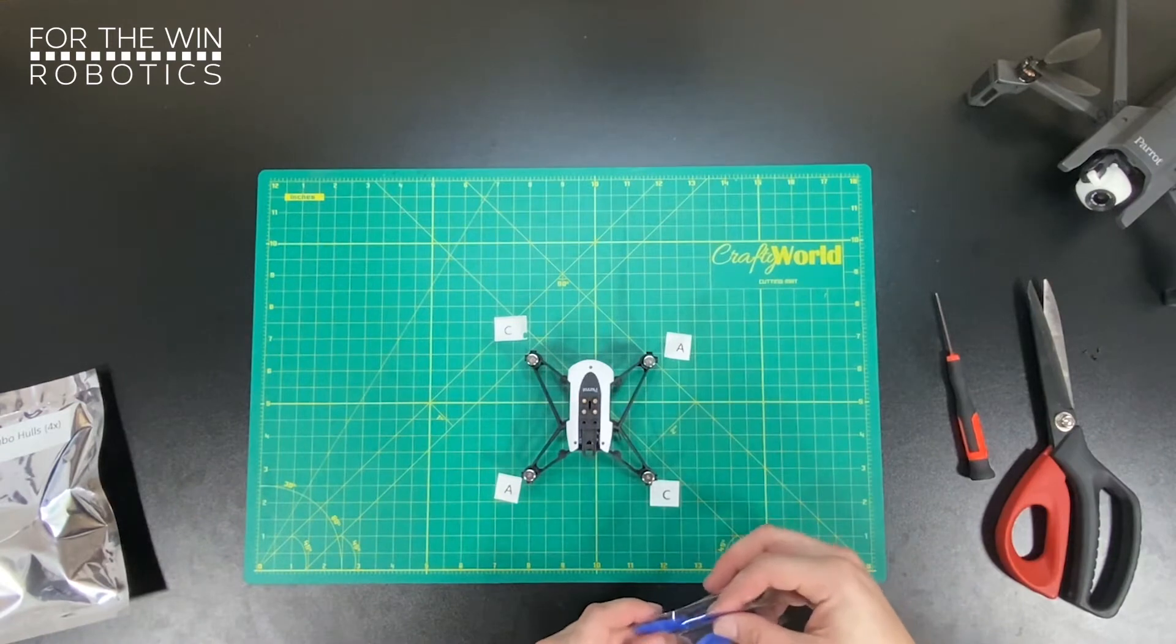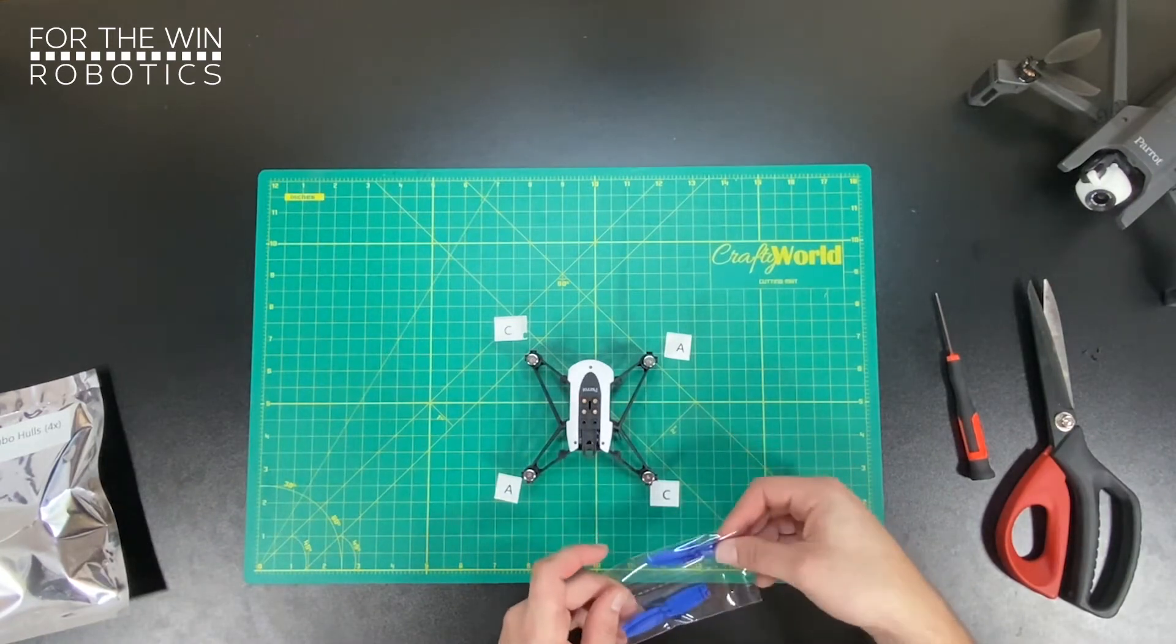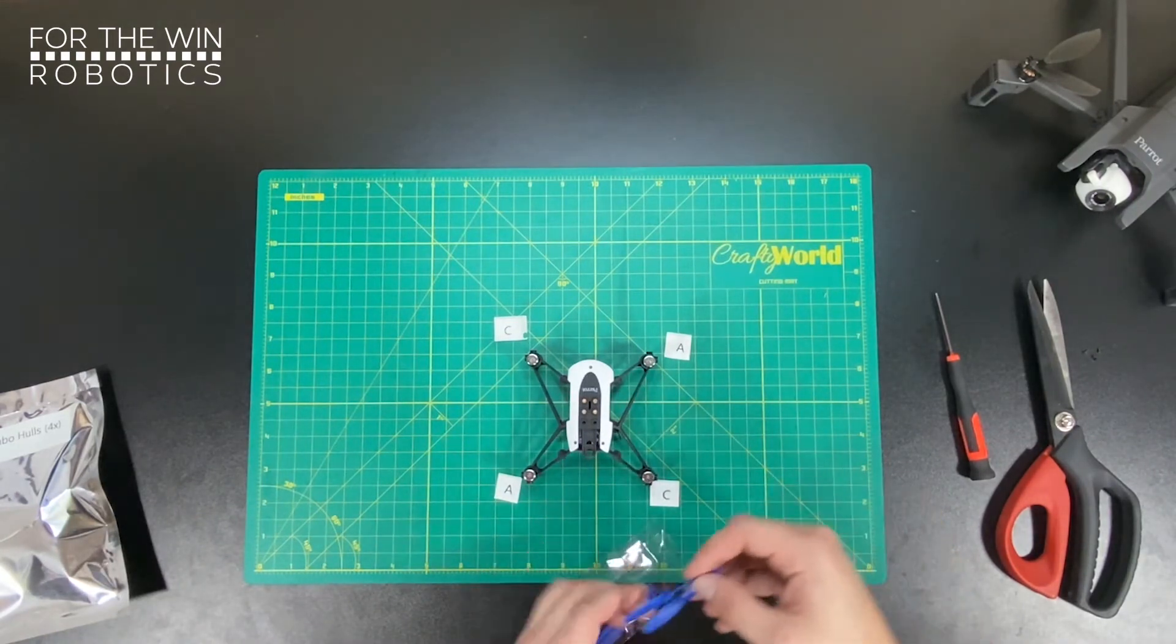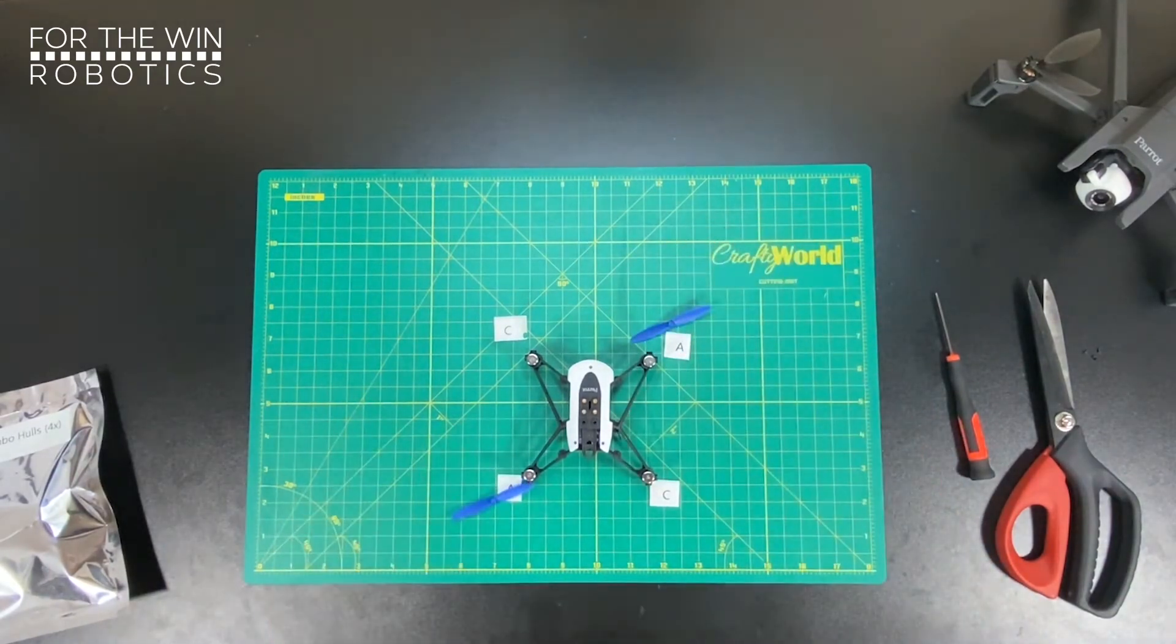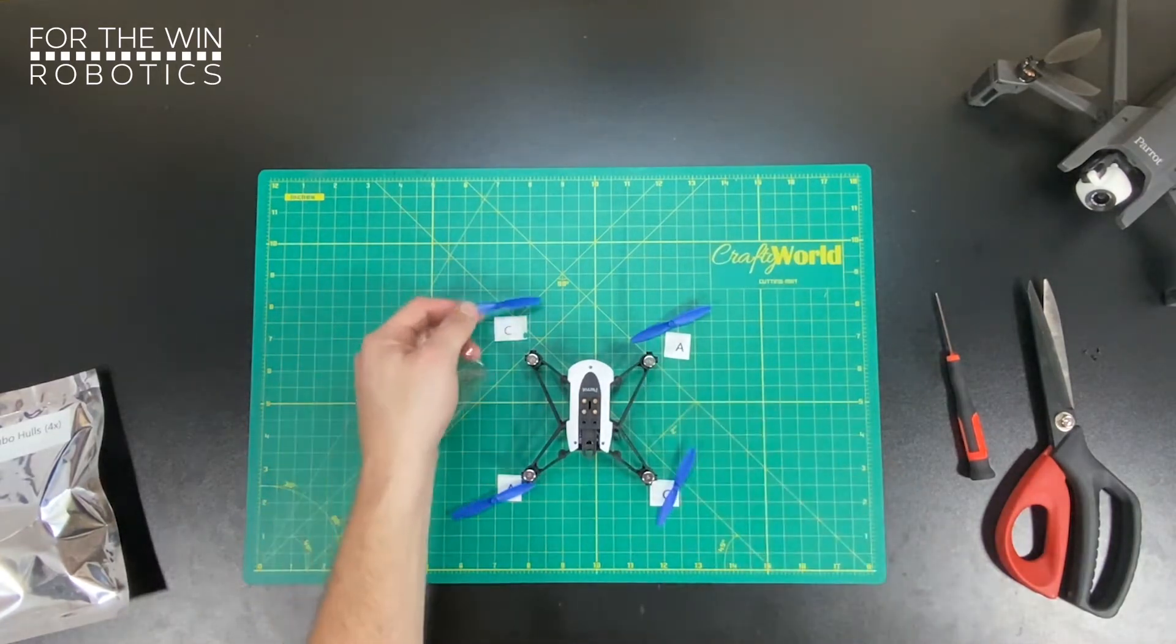So we're going to open our A on the left side first, two A propellers, and put that there and there for the time being. And same thing with our C propellers, put that there and there.